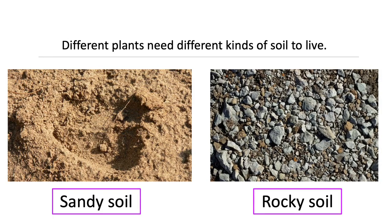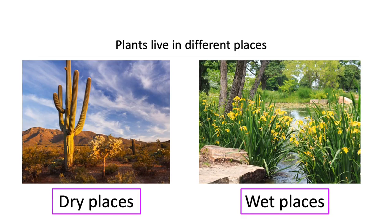Different plants need different kinds of soil to live. Some plants grow in sandy soil and other plants grow in rocky soil. Plants that live in dry places can hold water, whereas plants that live in wet places can get rid of extra water — they have leaves that point down so water can roll off them.